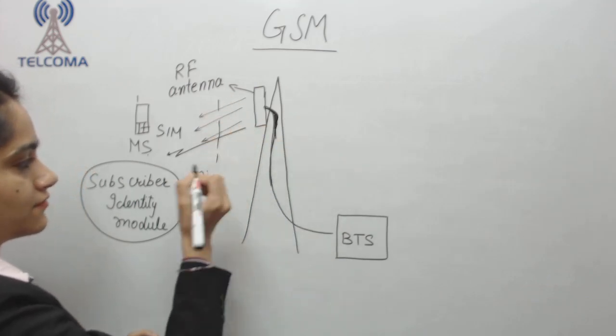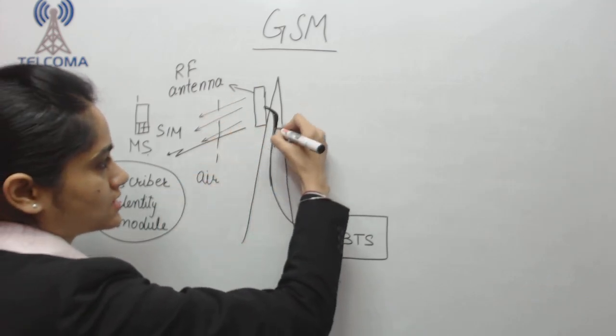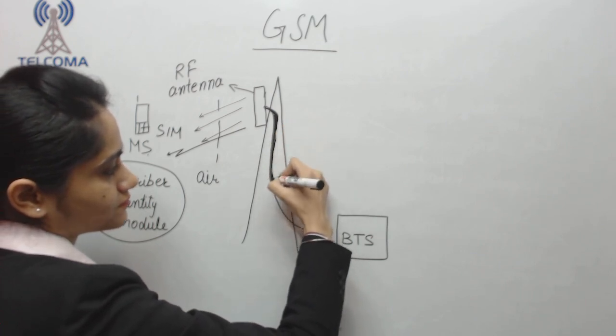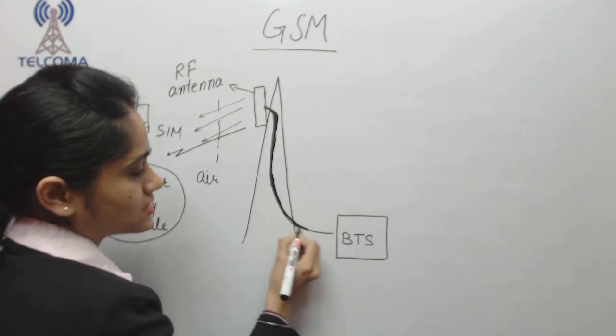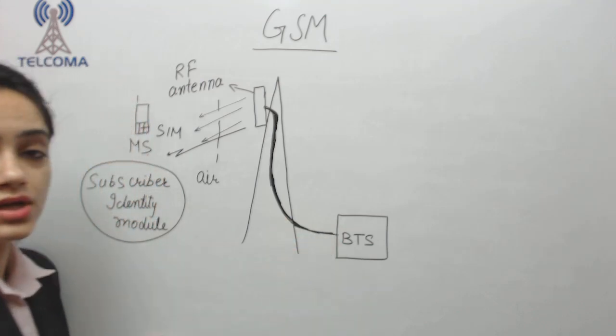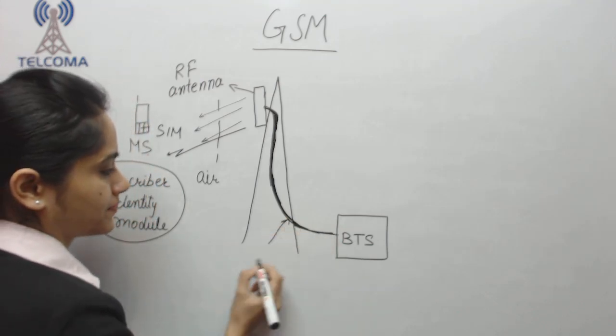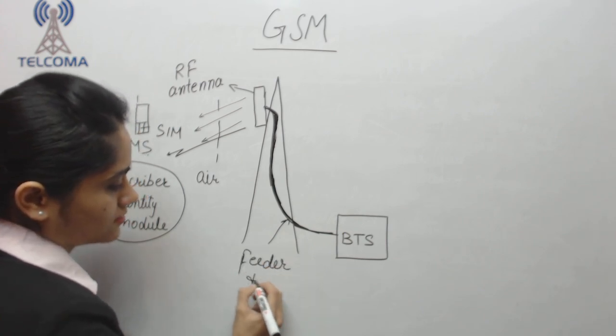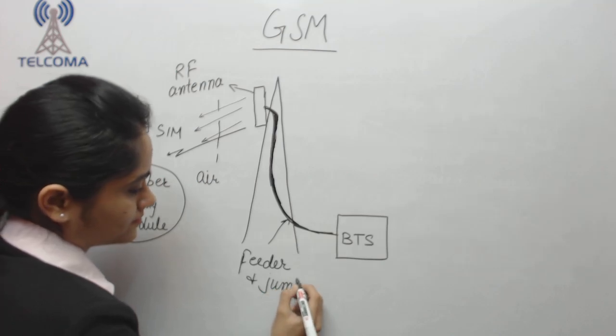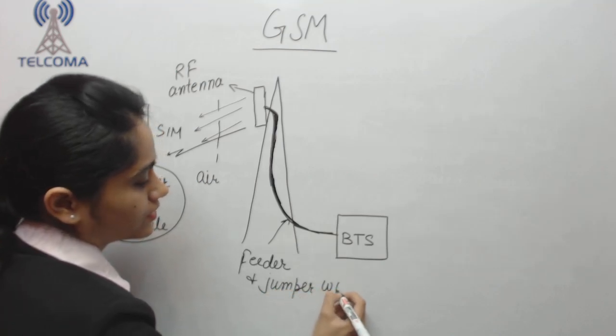Now, what is this connection? What is this media? We know that this interface is an air interface. Now we talk about the media through which the antenna is connected to BTS. We have this as a wired media, so we are using feeder and jumper wires.